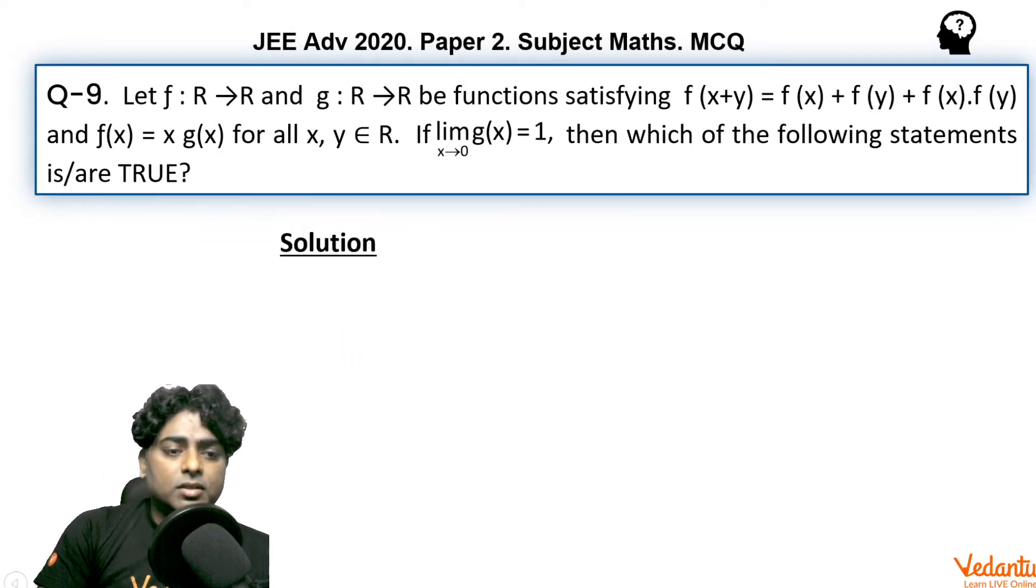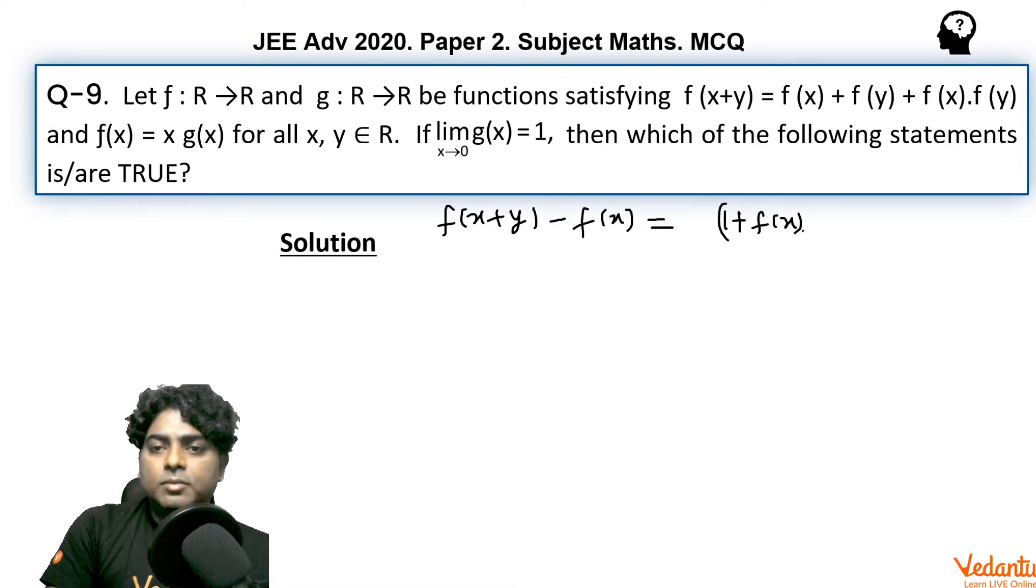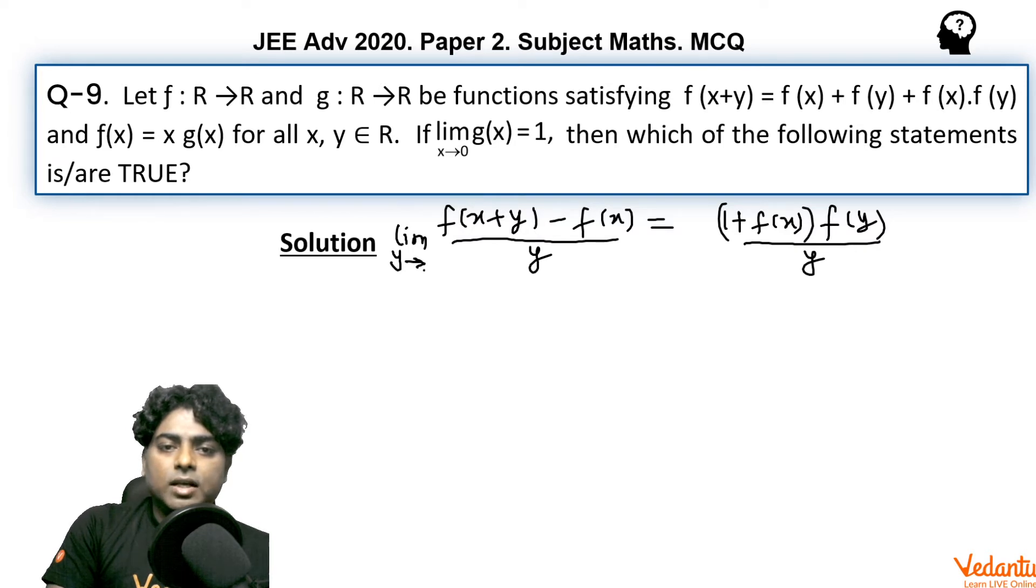I am rearranging the given relation in the manner like f(x+y) - f(x) equals, if I take f(y) common, then (1 + f(x)) into f(y), and I am going to divide this by y. Why I am doing this? Because in this way, we will get, going to make, putting limit y tending to 0.